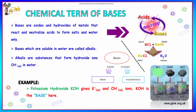Now, if we talk about bases — what are bases? Bases are oxides and hydroxides of metals that react with and neutralize acids to form salts and water. Bases that are soluble in water are called alkalis. Alkalis are substances that form hydroxide ions. For example, potassium hydroxide (KOH) produces hydroxide ions. Bases are classified as soluble (alkalis) and insoluble bases.